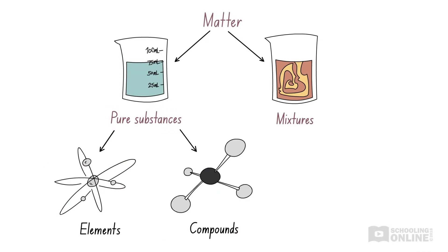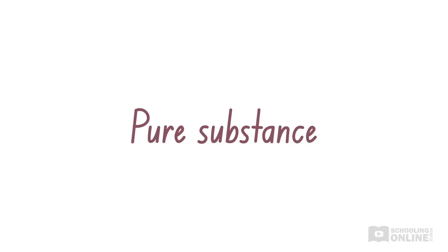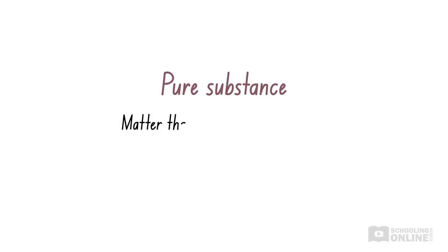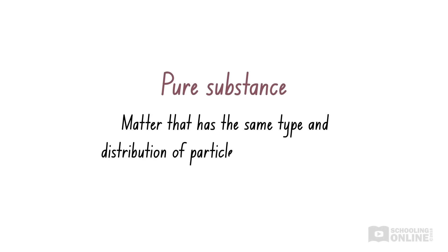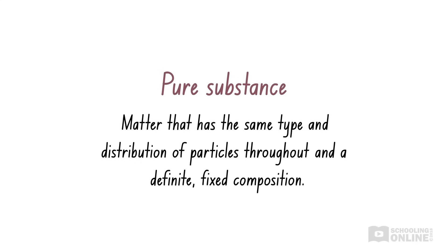Matter can exist as a pure substance or a mixture depending on its composition — in other words, depending on what it's made of. Pure substances consist of matter that has the same type and distribution of particles throughout and a definite, fixed composition. In other words, pure substances can be physically broken up into identical products.